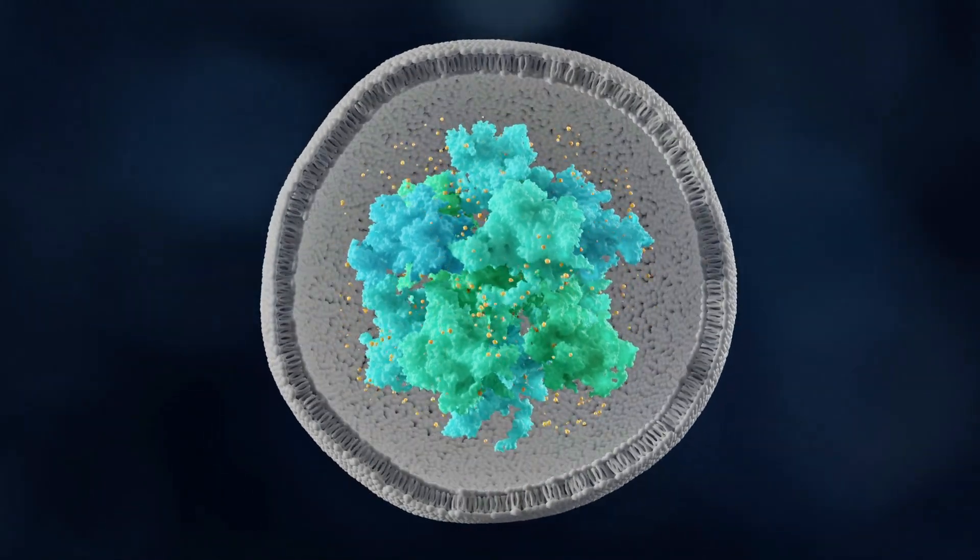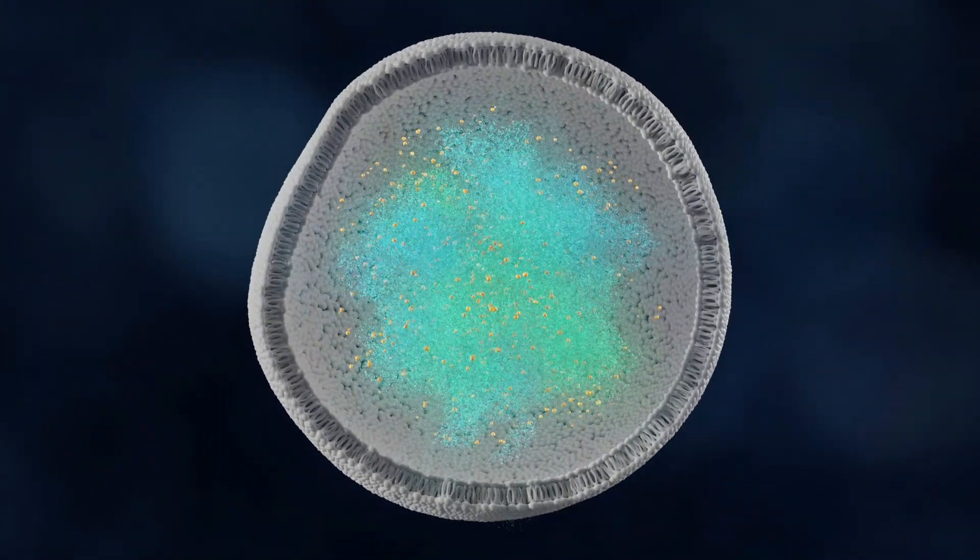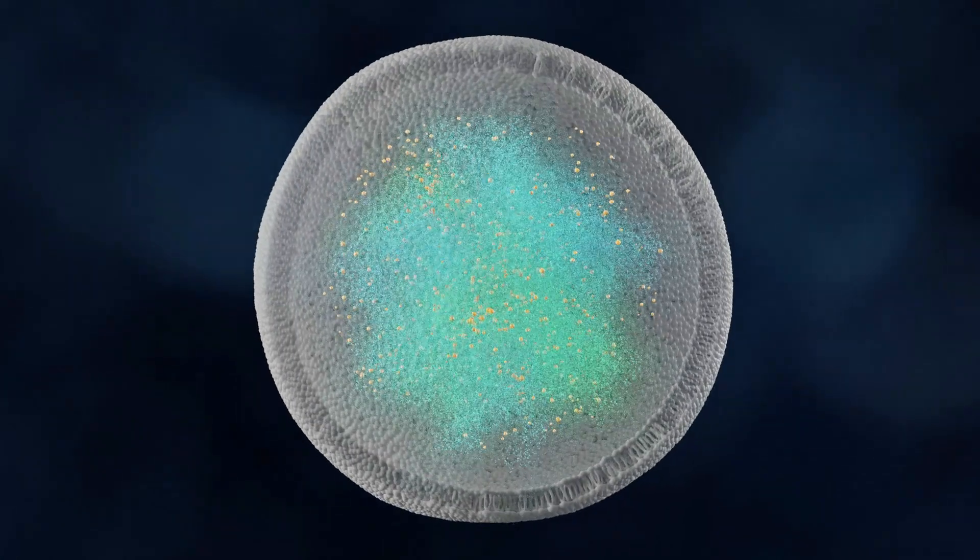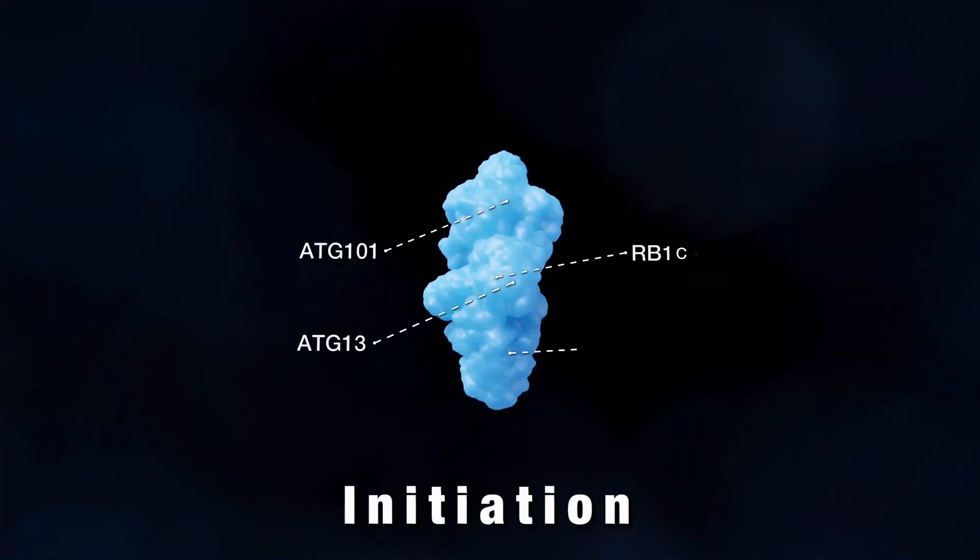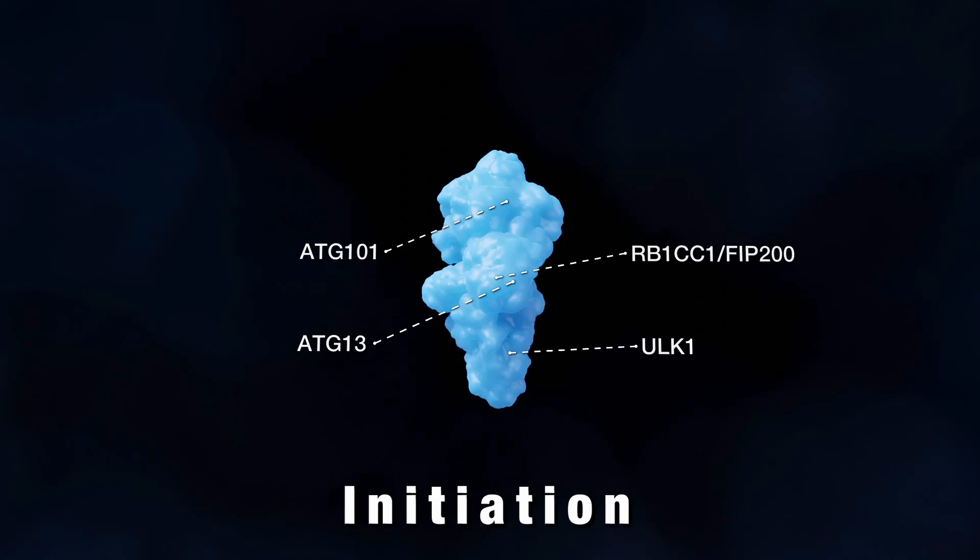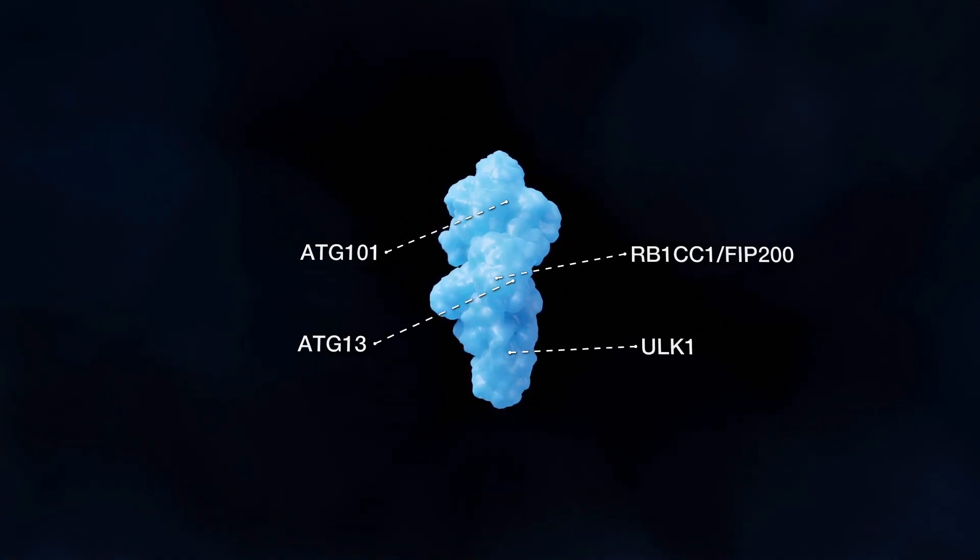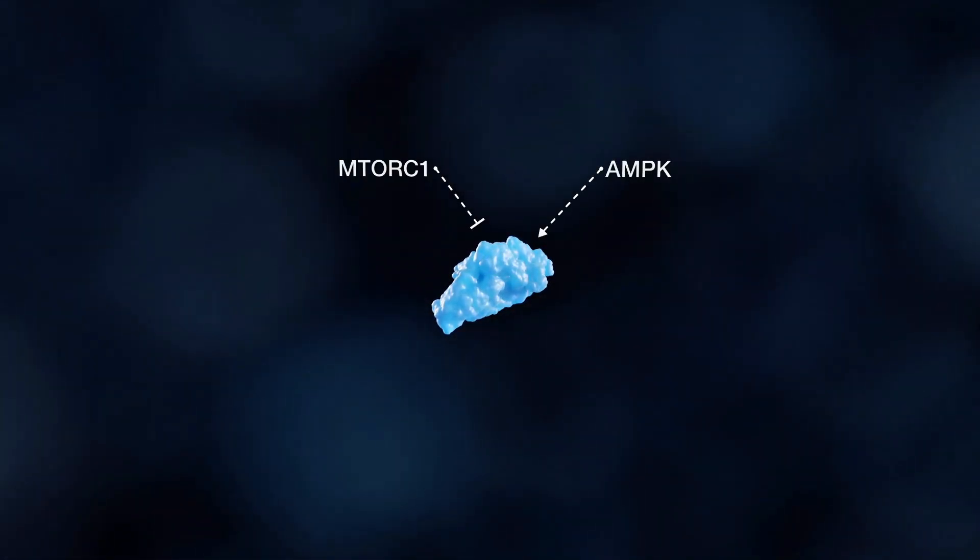Although both bulk and selective types of autophagy involve autophagosomes, their induction mechanism differs. The initiation step of bulk autophagy is characterized by the activation of the HULK kinase complex. Multiple signaling cascades regulating autophagy directly act on this complex.